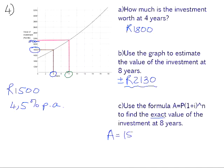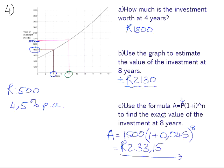So our starting value is 1,500. The P is the starting value. The interest is 4.5% per annum as a decimal. That's 0.045. And we want to know the value at 8 years, which is 2,133 rand and 15 cents. So we can see that our estimate off the graph wasn't too far off.